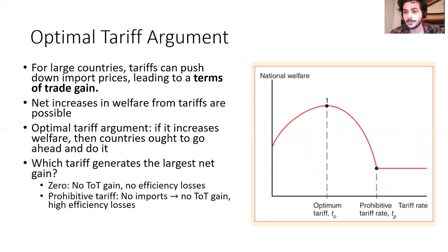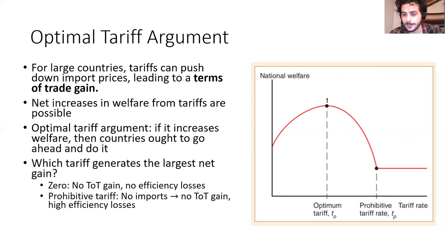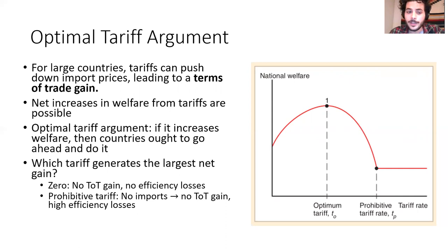One argument we saw last time, just from our analysis of the effects of trade policies, is the optimal tariff argument. For large countries, tariffs can push down import prices, which leads to what we call a terms of trade gain. Think of that as the relative price of your export goods. If you lower the price of your imports, you're getting a good deal on what you're buying. And in some cases, this can actually outweigh the efficiency losses of tariffs, so a net increase in welfare from tariffs is actually possible for a large country.